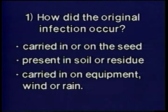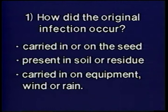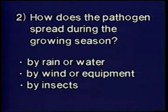Second, how does the pathogen spread during the growing season? Is it spread by splashing rain or water, by wind, by equipment, or by insects? Third, what environmental factors favor disease development? In order for a plant disease to occur, it is necessary to have a susceptible plant, the pathogen, and environmental conditions which favor disease development. For example, many leaf spot and leaf blight diseases are favored by warm, wet, or humid weather.